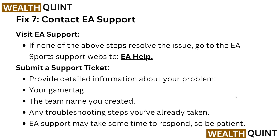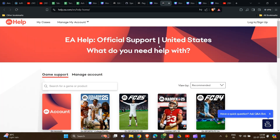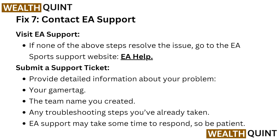The seventh fix is to contact EA Support. If the problem is still not resolved, go to EA's support website and contact them to resolve the issue with their guidance. Submit a support ticket providing detailed information about your problem, your gamertag, the team you created, and any troubleshooting steps you have already taken. EA support may take some time to respond, so be patient.